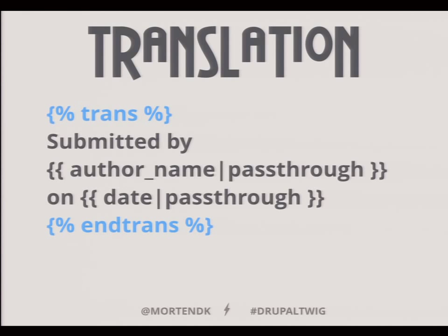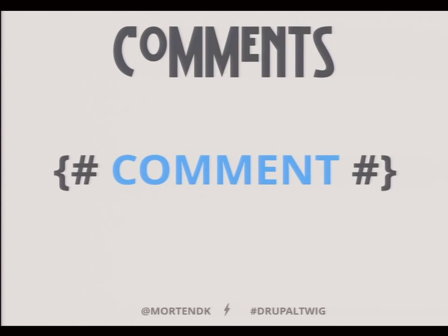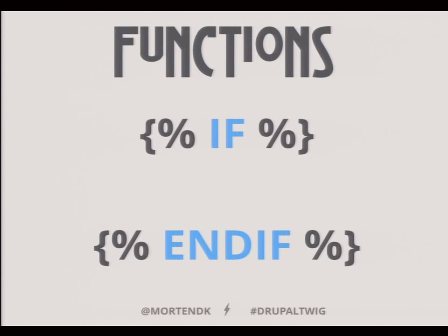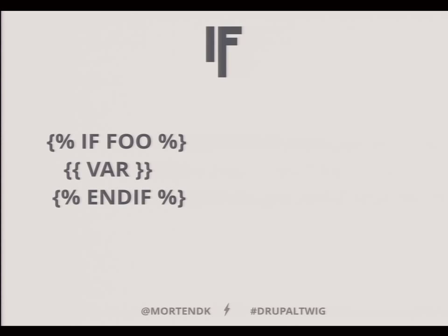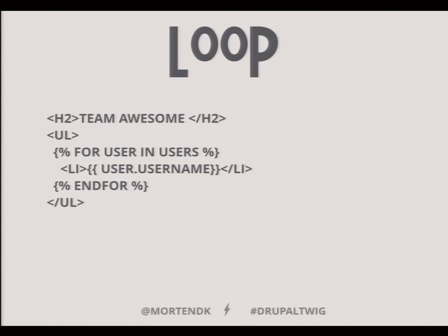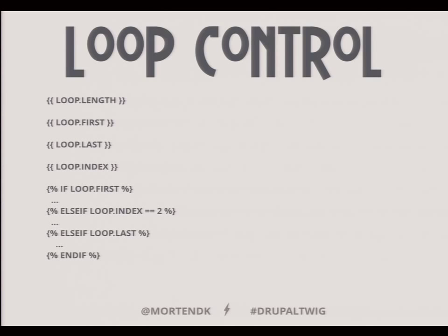Sensible defaults. This is the new translation tag — if you want to translate a whole block of code, this is how you do that. You can comment stuff out by adding a hashtag. You have functional stuff with the percentage sign — if and end if. You can set a new variable inside a Twig template. We also have loops: if you have an array of data, you can loop through it really easily, with loop controls as well. I'm going to show examples of all this.